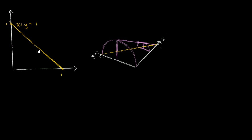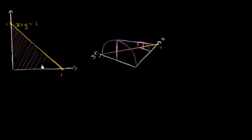This right over here is the graph of x plus y equals one. The region that's below that graph, but still in the first quadrant, is the base of a three-dimensional figure. So this region right over here is the base of a three-dimensional figure.